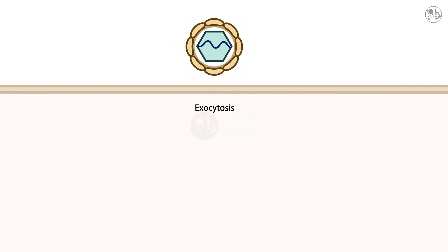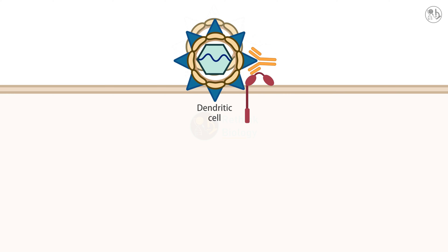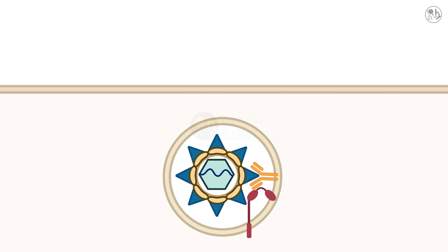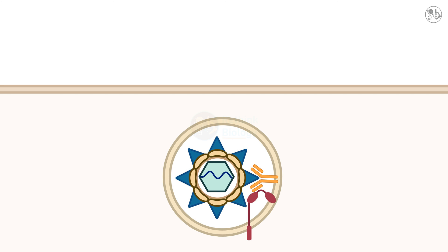The dengue virus can also evade the immune system by forming immune complexes with antibodies. These complexes can bind to receptors on other cells, such as dendritic cells, and enhance the infection. This phenomenon is called antibody-dependent enhancement, and it can lead to more severe forms of dengue disease.